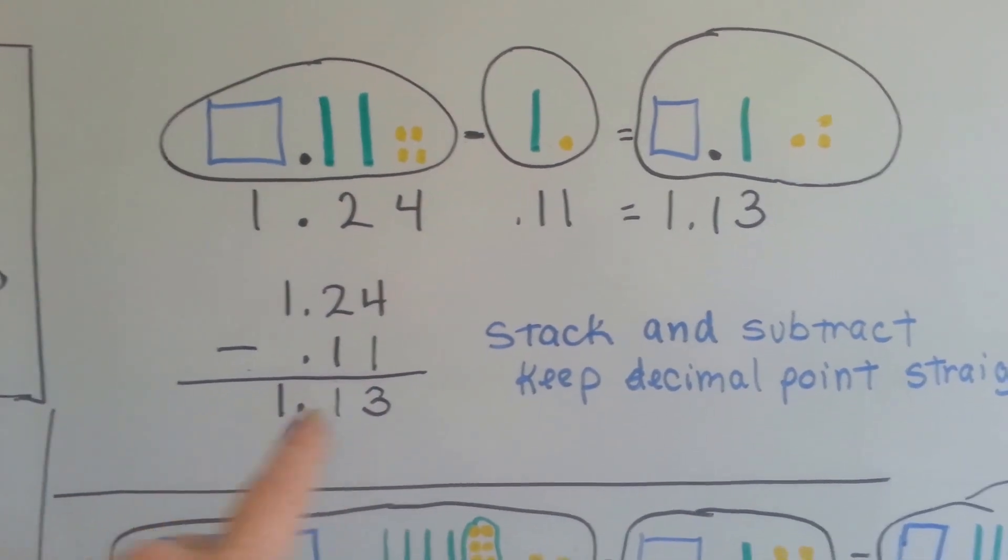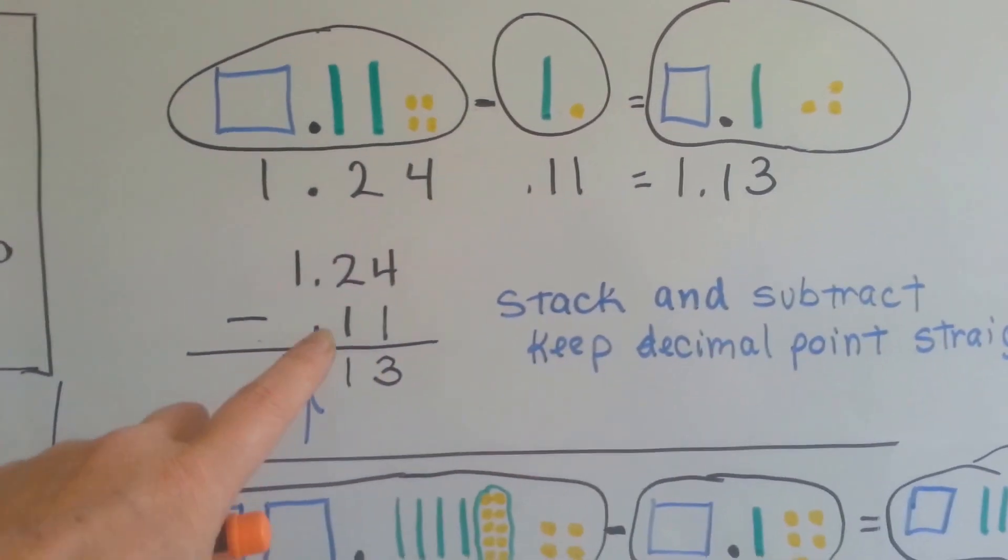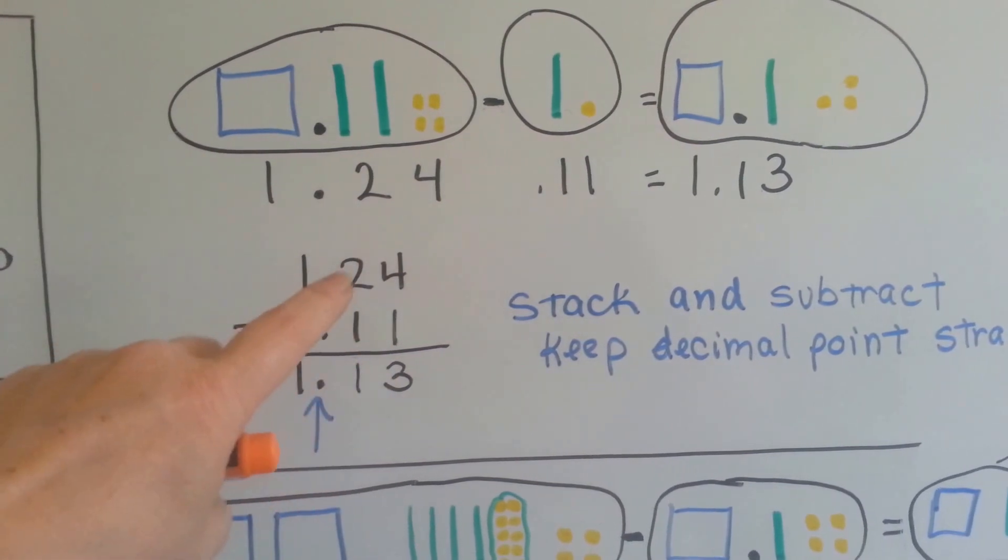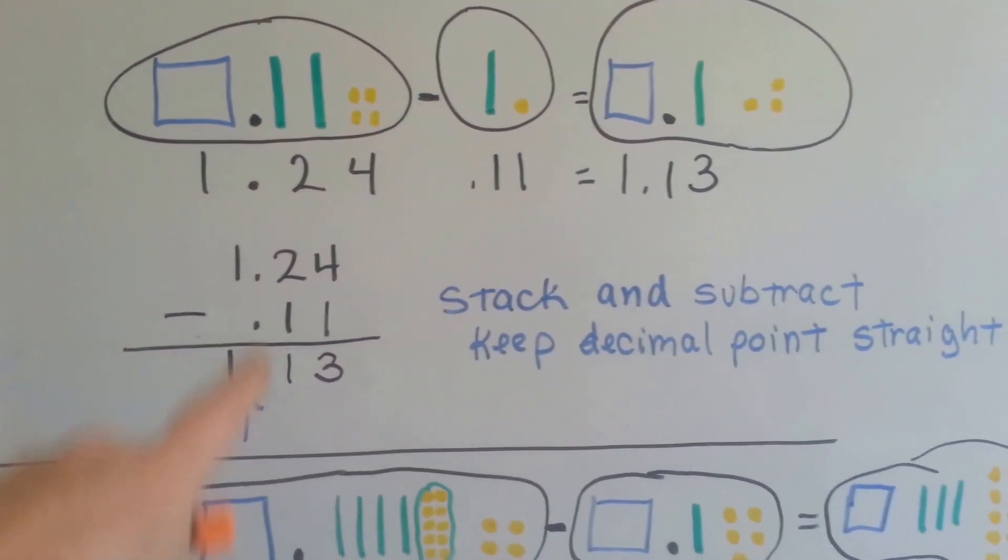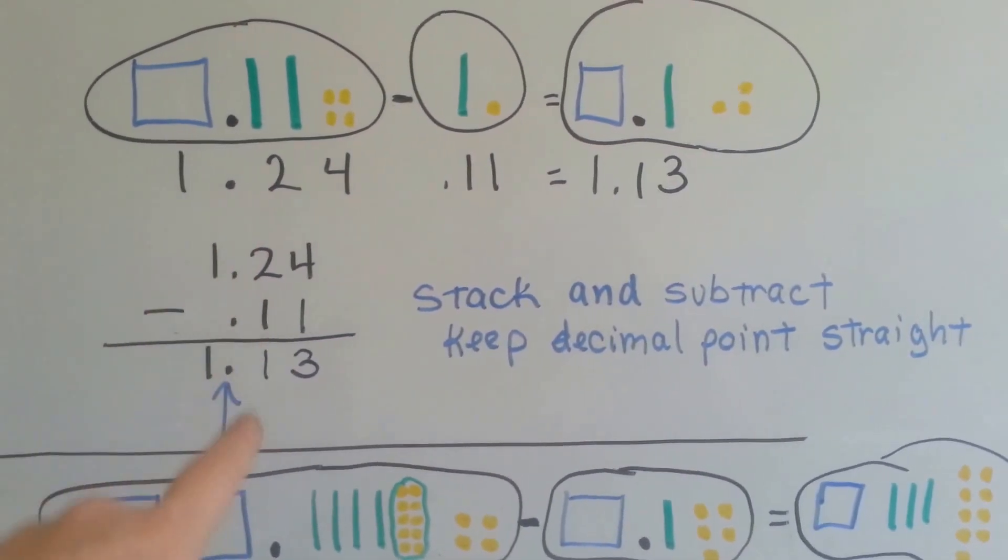We have one and twenty-four hundredths minus eleven-hundredths, and if we did it stacking and subtracting, you can see, four take away one is three, two take away one is one, and we drop the one down. We always keep our decimal point really straight.